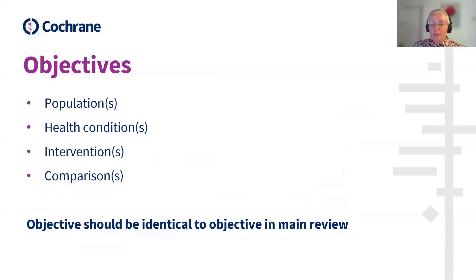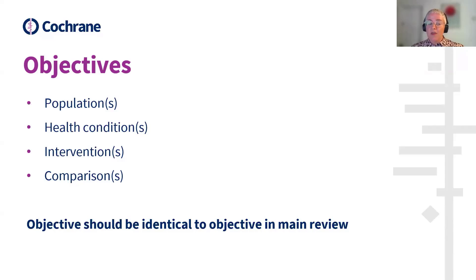On to the objectives of the review. These should include reference to the population under consideration, the health condition, the intervention, and the comparison. The objective in the abstract should be identical to the objective in the main review.